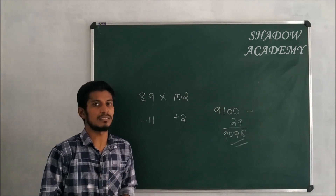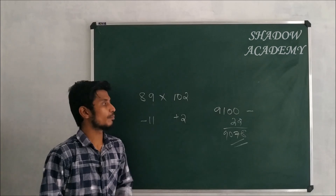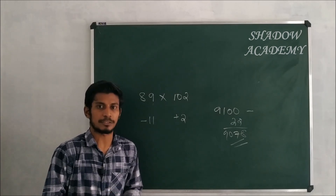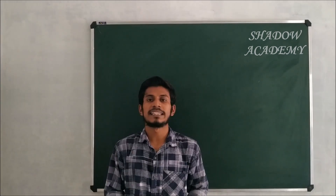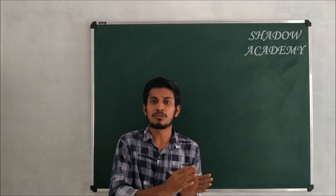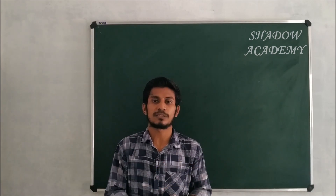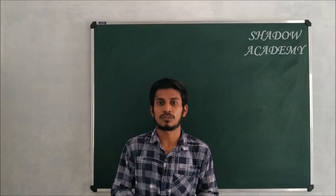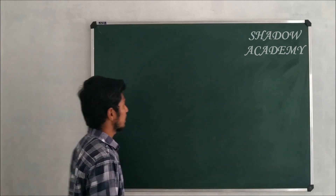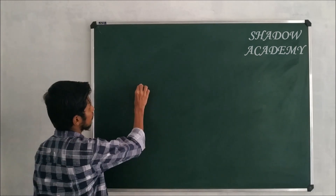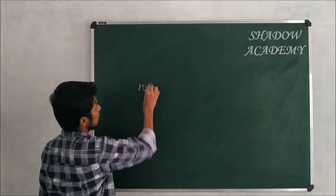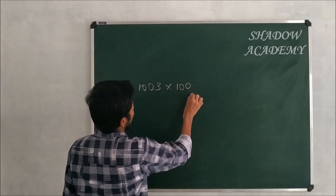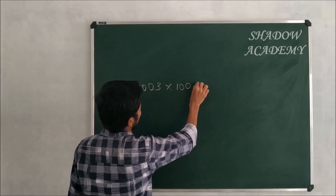This is the next category. We have 4-digit numbers near 1000. Let's do: 1003 × 1005. We use the same method, comparing to base 1000.